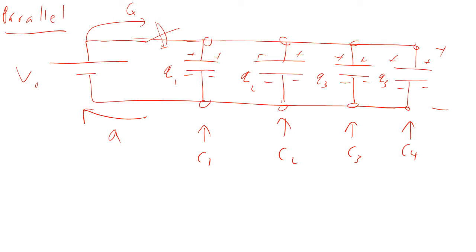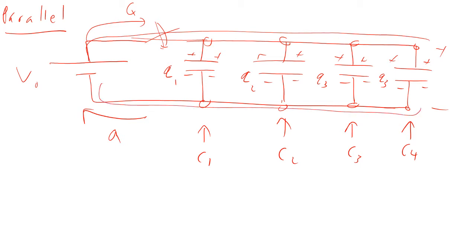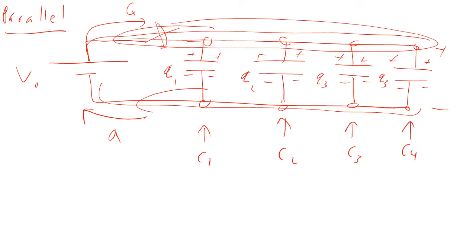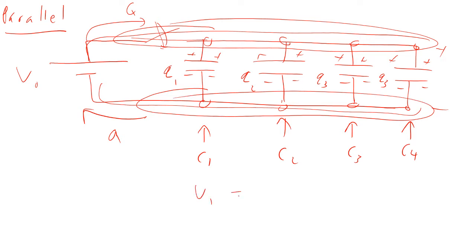Because the wire across the top is a conductor and the wire across the bottom is a conductor, you have the same electric potential everywhere at the top and the same electric potential everywhere at the bottom. So that means that V1 equals V2 equals V3 equals V4, and that's equal to V0, which is the power supply voltage we applied.